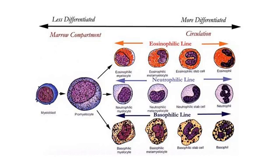The key difference between basophil and eosinophil is that basophils can stimulate inflammation responses by releasing heparin, histamine, and serotonin, while eosinophils provide important defense against parasites by phagocytosis and producing antihistamines.